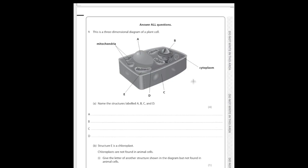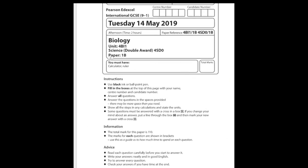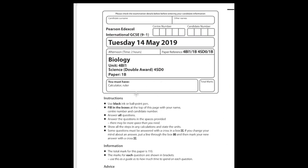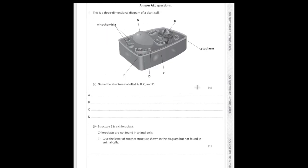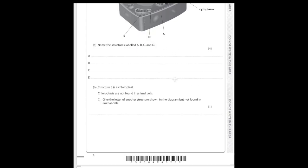We're looking at IGCSE Biology, specifically command terms. Command terms appear in every single exam and many students slip up because they don't know what they mean. It's not explicitly taught and not explicitly part of the syllabus, so I can see why it trips people up, but they're actually very easy. In this video I want to go through this past paper — I'll post a link in the description — because it has a good range of different command terms we can talk about.